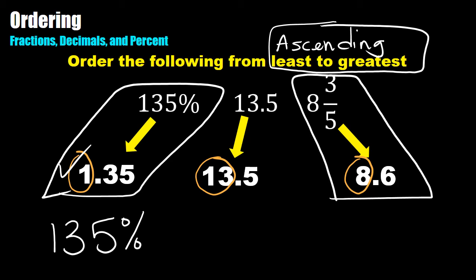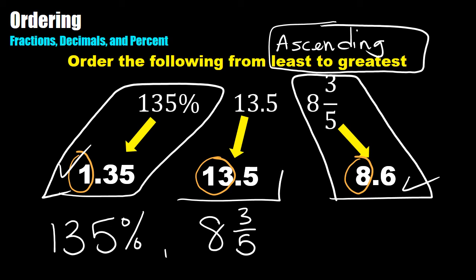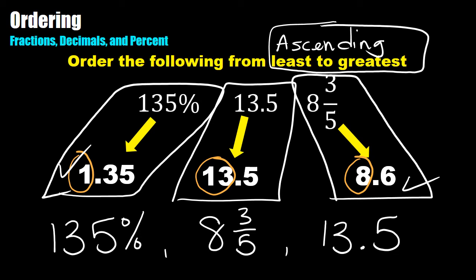Next on the list is 8 and 6 tenths, so I'm going to use the original format and write this as 8 and 3 fifths. Then I only have one left, which is 13 and 5 tenths, written as 13.5. I've figured out a common format, figured out the order, and rewrote them in the original format. I'll double-check to make sure they go from smallest to biggest — least to greatest.